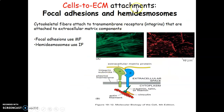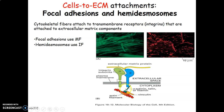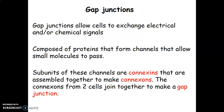For cell-to-extracellular matrix attachment, we have focal adhesions and hemidesmosomes. The cytoskeletal fibers can attach onto transmembrane receptors such as integrins or onto extracellular matrix components. Focal adhesions use microfilaments and hemidesmosomes use intermediate filaments. The extracellular matrix proteins connect onto the actin filaments via the integrin subunits.